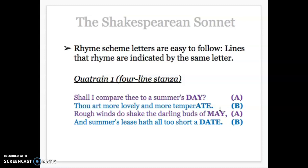Almost in the second line he's already saying you're better than summer — more lovely and more temperate. He then says 'rough winds do shake the darling buds of May,' so sometimes it's windy in May. And then he says 'and summer's lease hath all too short a date,' which is basically a metaphor comparing summer to leasing part of the year — summer doesn't own the year, it only gets a few months.